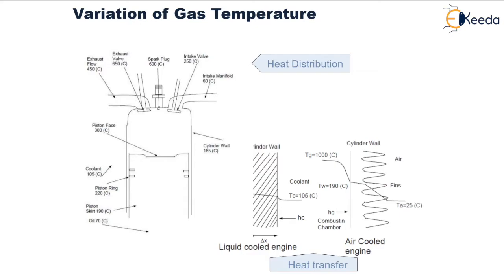A heat transfer comparison is shown for liquid cooled and air cooled engines. The temperature of the gas inside the combustion chamber is 1000°C, the temperature of the combustion chamber wall is 190°C, the ambient air temperature is 25°C, and the coolant temperature is shown to be at 105°C.